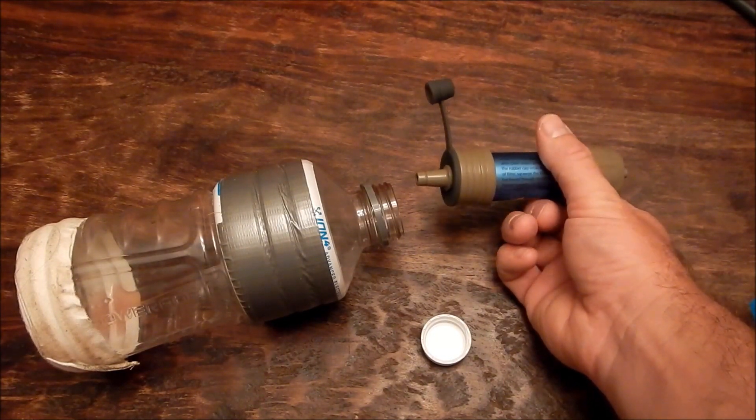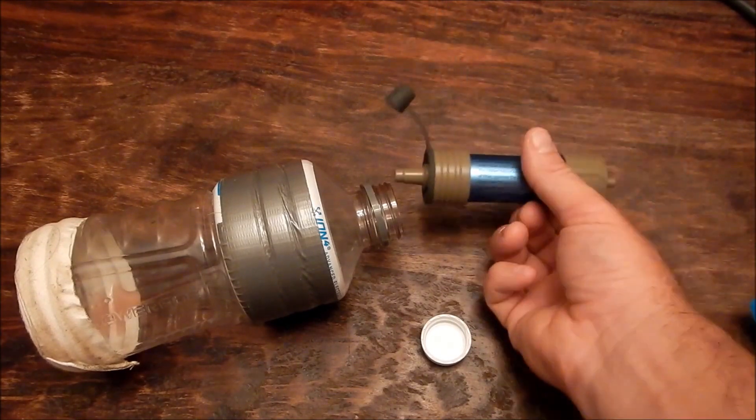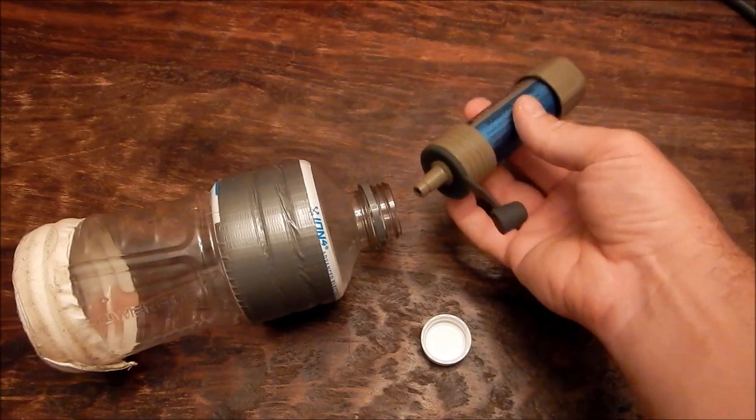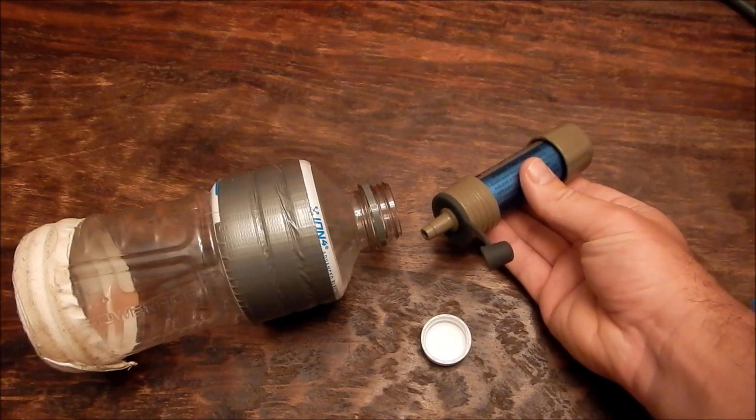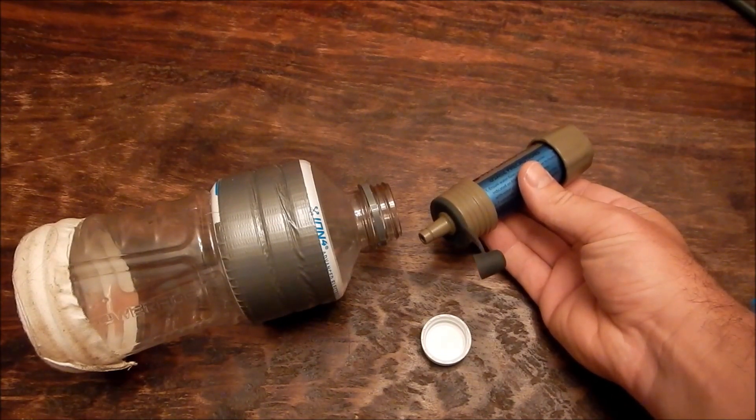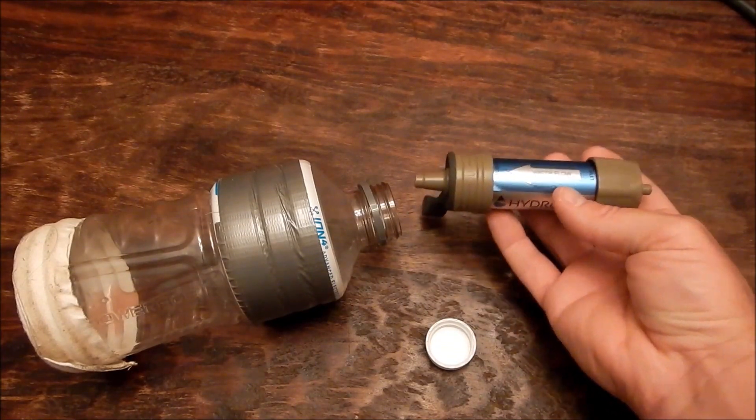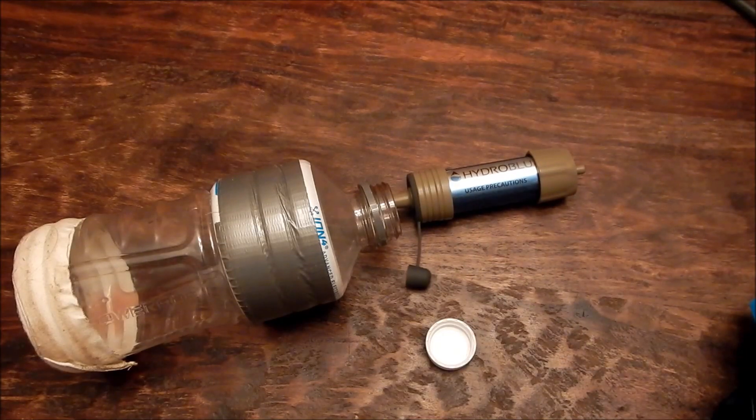So that's one thing they have a leg up on with the Sawyer mini. Other than the fact that this thing is slightly larger and I believe the water flow is greater with this. Remember, it's a cheap, lightweight way to create a gravity filter.